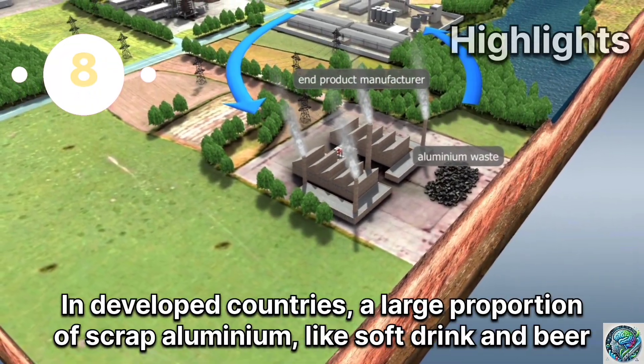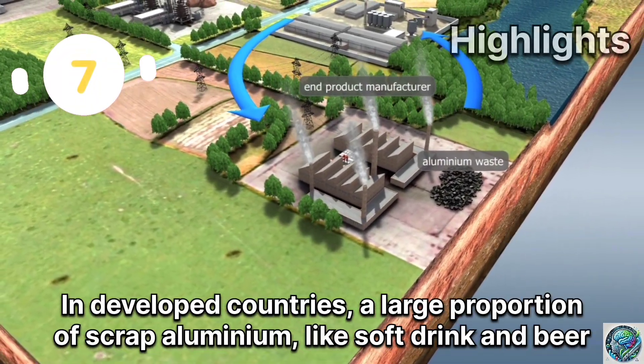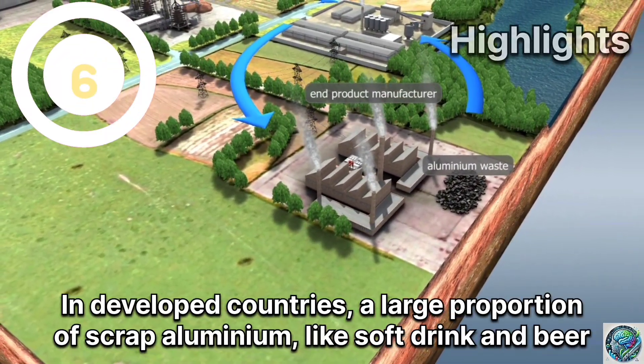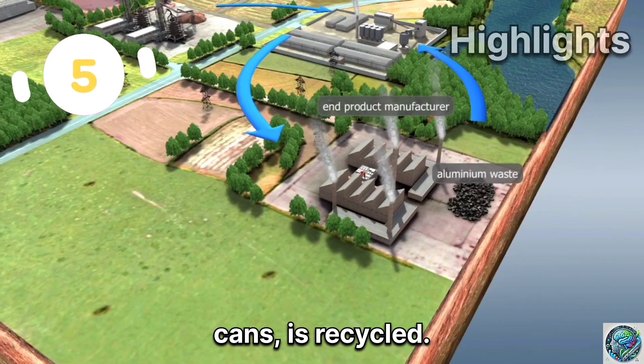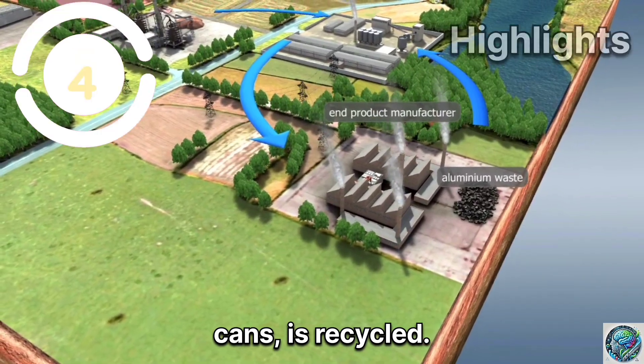In developed countries, a large proportion of scrap aluminium, like soft drink and beer cans, is recycled.